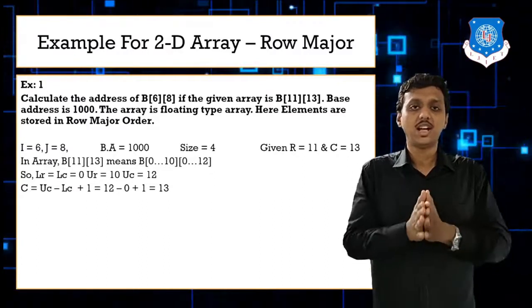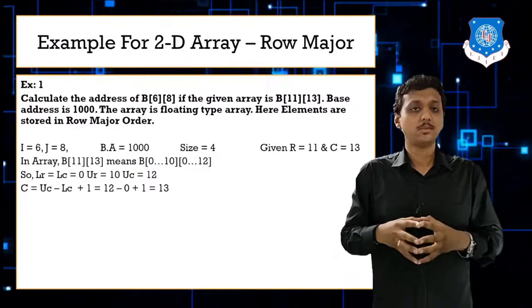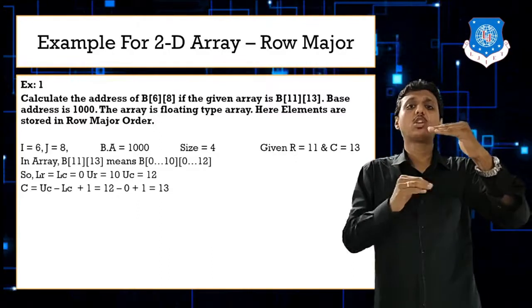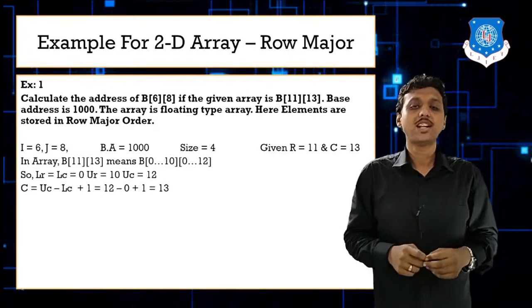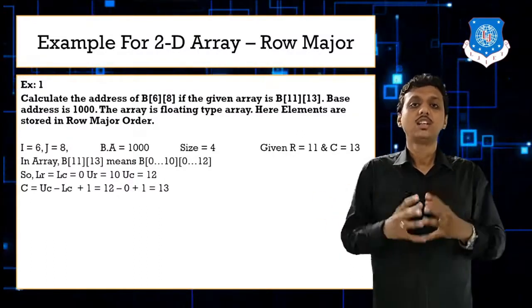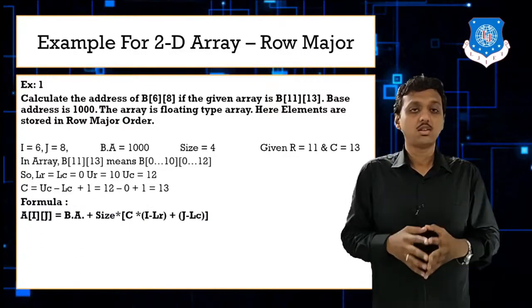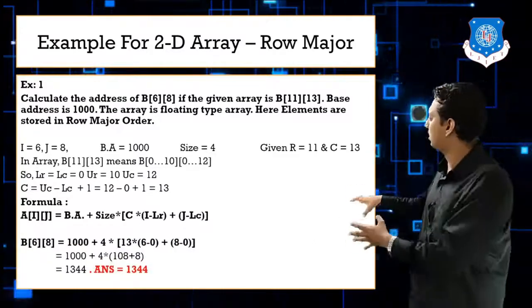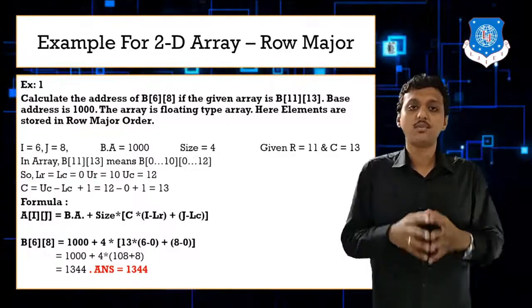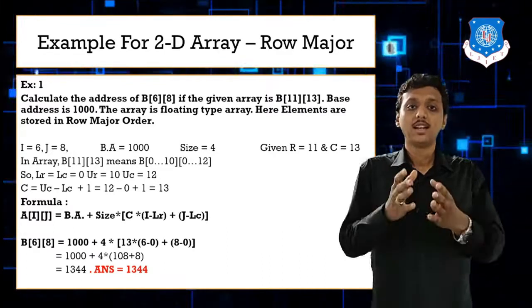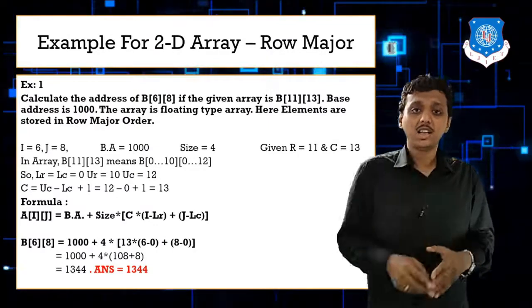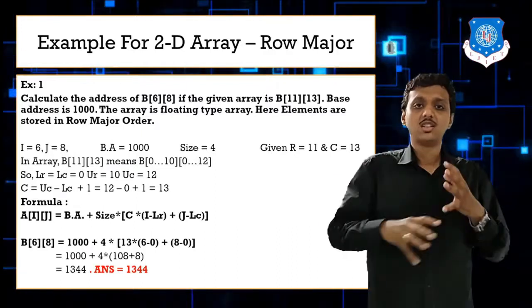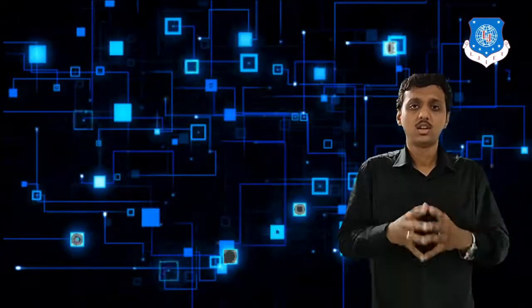Calculate C: C = UC - LC + 1 = 12 - 0 + 1 = 13. LR = 0, LC = 0. Now apply the formula: A[i][j] = 1000 + 4 × (13 × (6 - 0) + (8 - 0)). Since it's a floating type array, size = 4. Solving this equation gives the answer 1304.